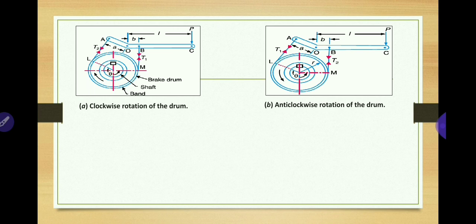Whenever the drum is rotating in the clockwise direction, the tight side T1 will be towards the right-hand side of the drum and the slack side T2 will be towards the left-hand side. Whenever the drum is rotating in the anticlockwise direction, T1 will be towards the left-hand side of the fulcrum and T2 towards the right-hand side. This must be carefully noted while taking moments and assigning T1 and T2 in the correct direction.